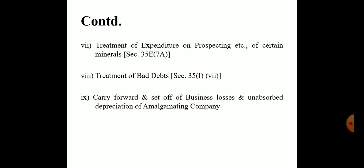Eighth, treatment of bad debts under Section 36 subsection 1 clause 7: where due to amalgamation the bad debt or debt of the amalgamating company has been taken over by the amalgamated company, and subsequently such debt or part of it becomes bad, such bad debt will be allowed as a deduction to the amalgamated company.